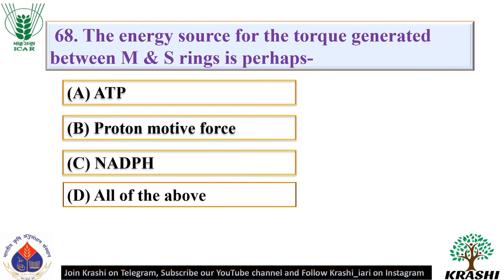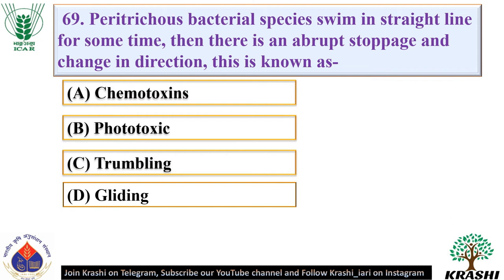Question number 68: The energy source for the torque generated between M and S rings is perhaps. The correct answer is option B — proton motive force. Question number 69: Peritrichous bacterial species swim in a straight line for some time, then there is an abrupt stoppage and change in direction. This is known as. The correct answer is option C — tumbling.